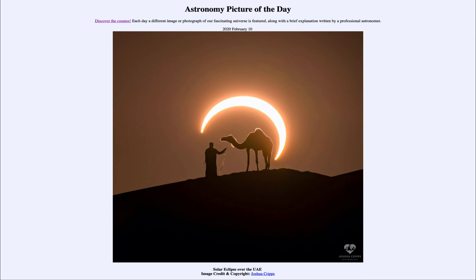In that case it would not have fully blocked out the light of the sun — we'd still have some sunlight around it. The other type of eclipse we can get is a total solar eclipse, which occurs when the moon does completely block out the sunlight.